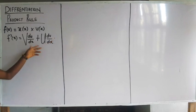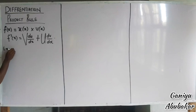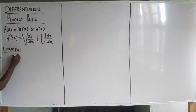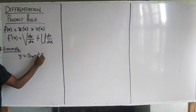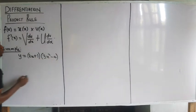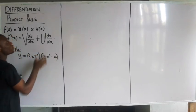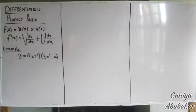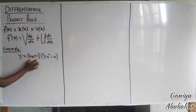So if I have two terms multiplying each other, I will apply the concept of Product Rule. For example, if I have y equal to (2x + 1) into (3x² − 4), this is a term and a term multiplying — I will apply the Product Rule. Your first task is to call one term u and the other v.